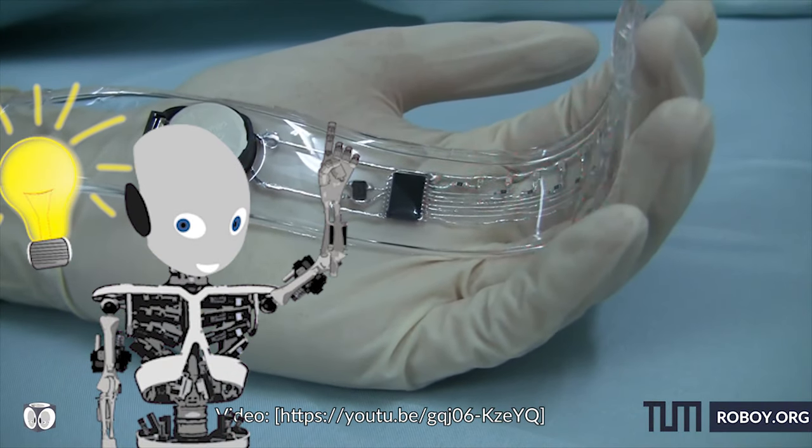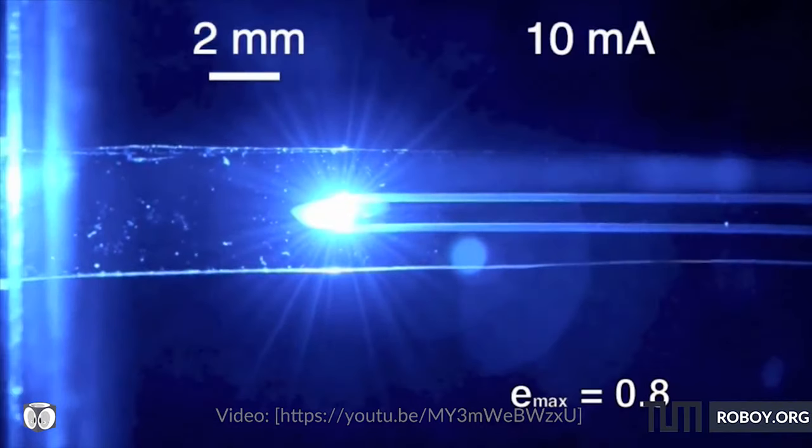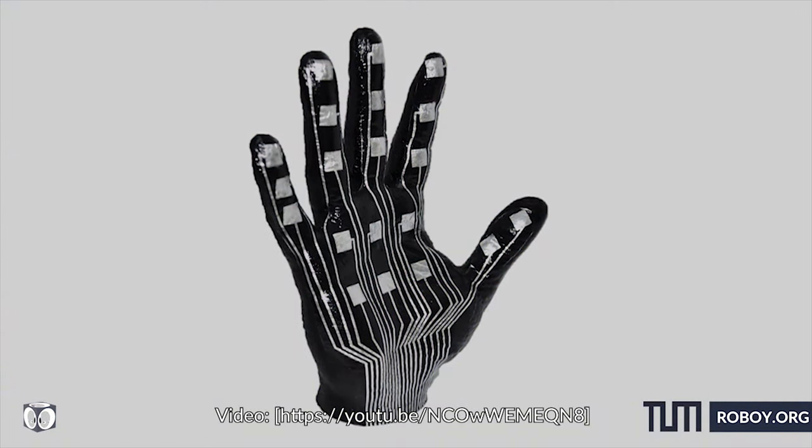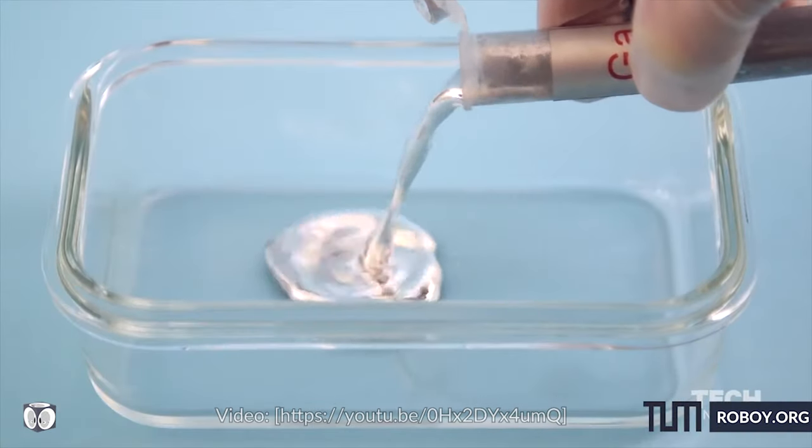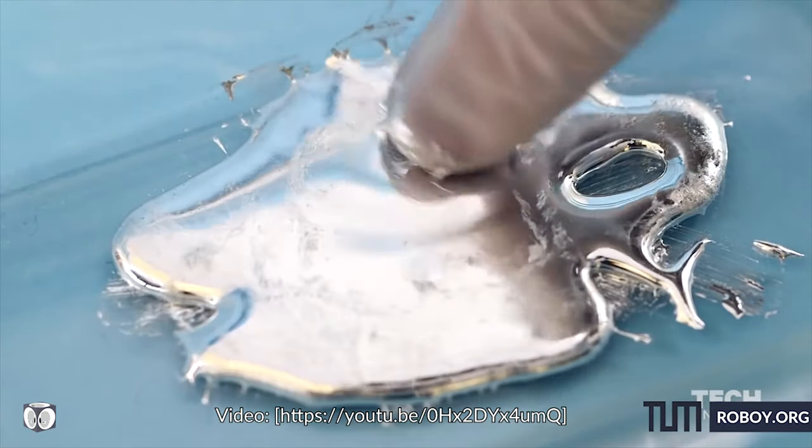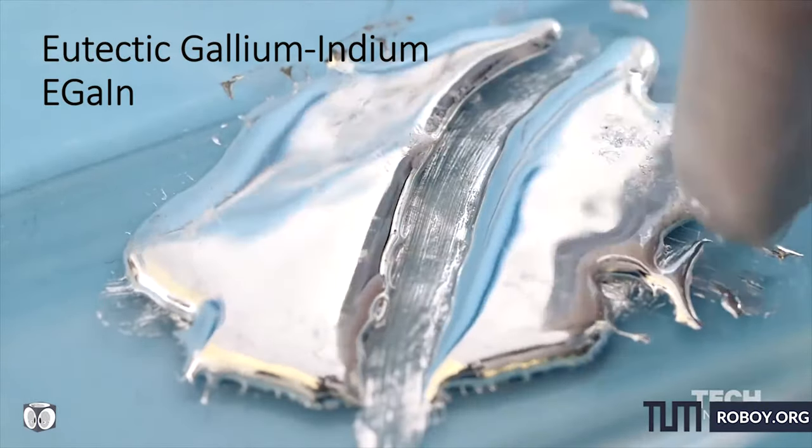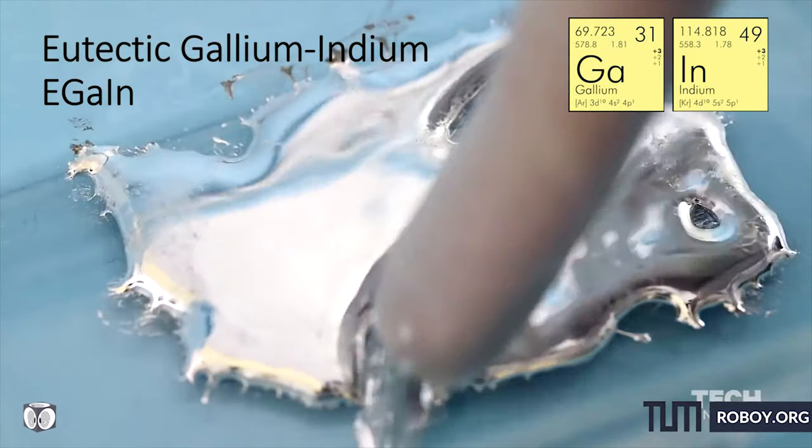It is! Scientists developed a flexible electronic skin to bring the sense of touch to robots and prosthetic devices. The approach is to use a liquid conductive material as a sensor called eutectic gallium indium, which is an alloy of gallium and indium that is liquid at room temperature.